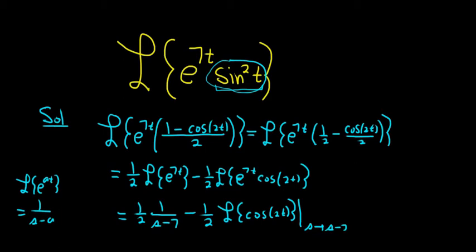So like if it was e to the 4t, it'd be s minus 4. If it was e to the negative 7t, it'd be s plus 7, right?